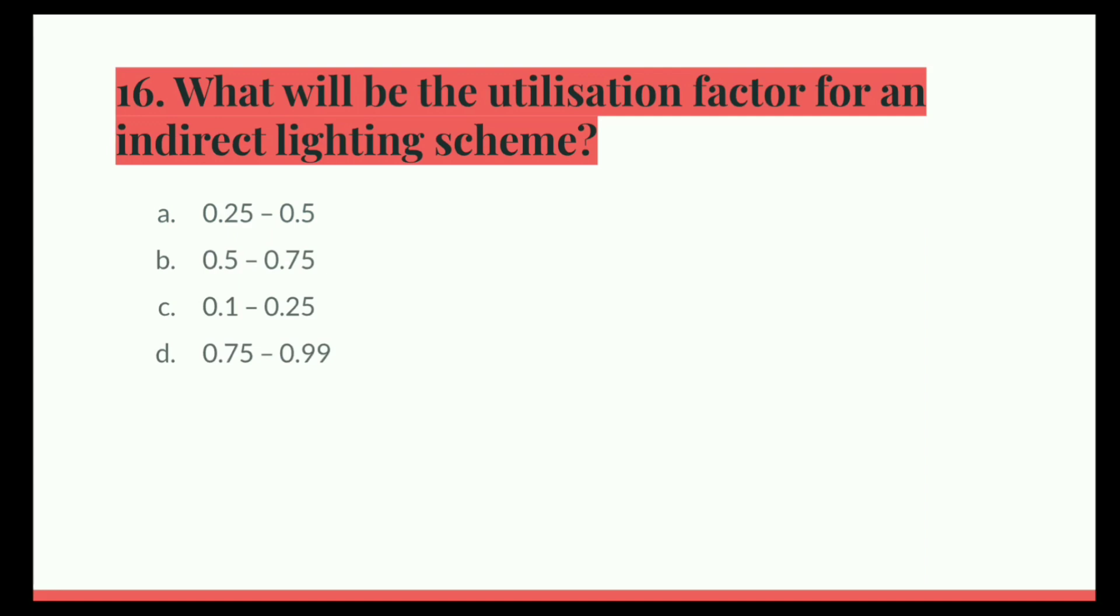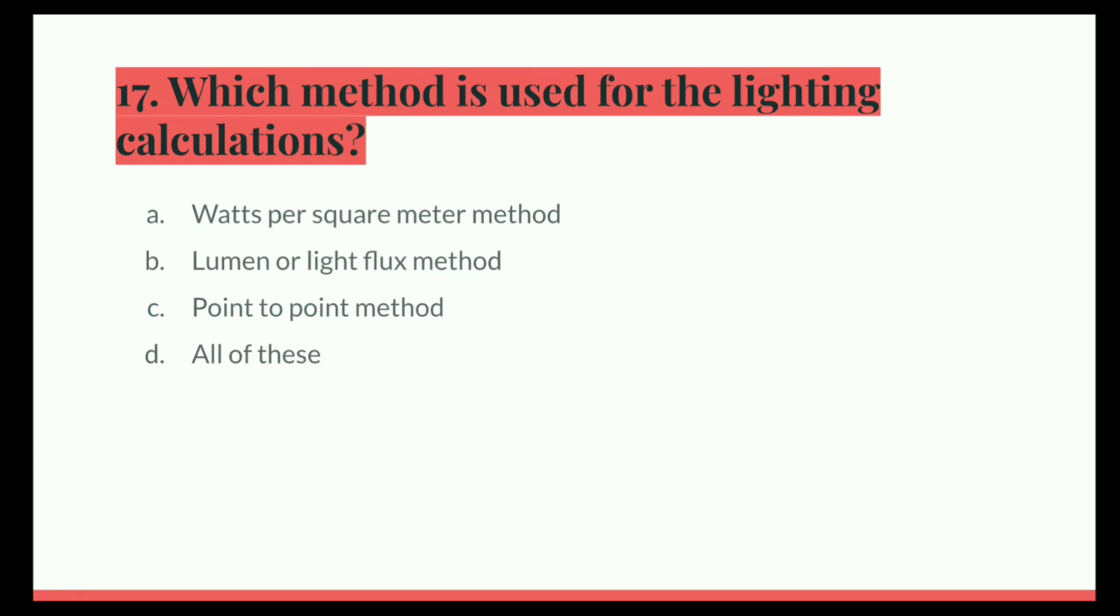Next question. What will be the utilization factor for an indirect lighting scheme? Option A, 0.25 to 0.5. B, 0.5 to 0.75. C, 0.1 to 0.25. D, 0.75 to 0.99. And the correct answer is 0.1 to 0.25.